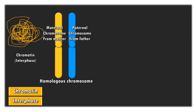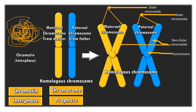We know that we receive half a set of chromosomes from father and the remaining half set from mother. Accordingly, we call them maternal chromosomes and paternal chromosomes — that is, from mother and father respectively. How do we define homologous chromosomes? The chromosomes which are morphologically similar and which carry similar genes on the same locus are called homologous chromosomes. These chromosomes split during the metaphase stage, so we can see each chromosome with two arms. The arms of the same chromosome are called sister chromatids, whereas the arms of homologous chromosomes are called non-sister chromatids.